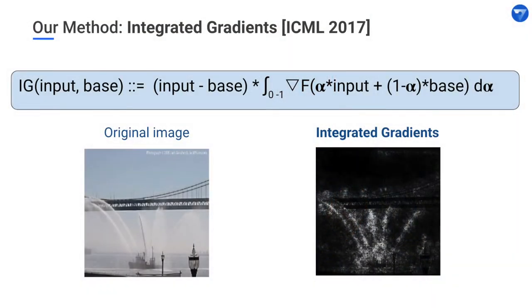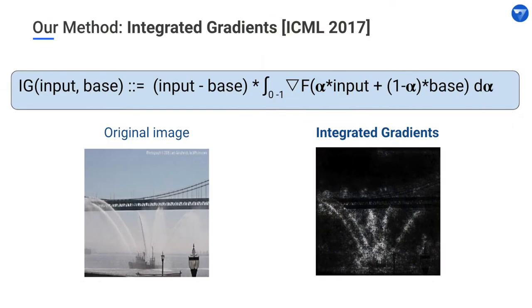This picture gives us the method. We take the input, take a baseline input — in the case of image models, think of a black image — and we take the straight-line path from the input to the baseline, integrating the gradients along the path. Informally, we interpolate along this path and average the gradients. This gives much better-looking attributions: the fire boat and the water spouts are highlighted — more relevant features for the fire boat label.